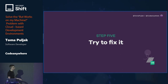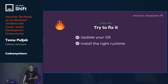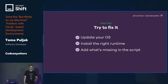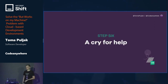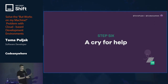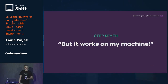So you move on to step five. You try to fix all of these issues — you click that update button on your OS that you've been snoozing for six months, install the right runtime. For example, you're on Java 18 and need to downgrade to Java 11. You do that and add what's missing to the installation steps, but it still doesn't work. Step six is just a cry for help. You need to bother a colleague, but of course their machine is not your machine and they say the feared phrase: 'but it works on my machine.'